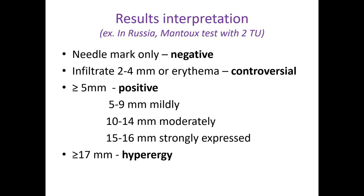Interpretation of the Mantoux test has specific features in different regions. Let's review the Mantoux test interpretation in Russia as an example of a high TB incidence country. Needle mark only: negative. Infiltrate 2–4 mm or erythema: controversial. 5 mm or more: positive. There are gradations of positive reactions — 5–9 mm mildly positive, 10–14 mm moderately positive, 15–16 mm strongly expressed reaction, 17 mm or more hyperergic — an alarming sign of active tuberculosis.